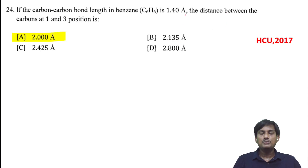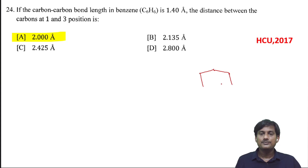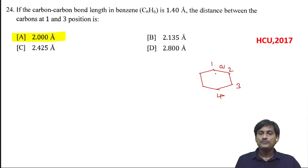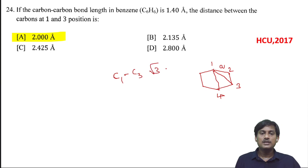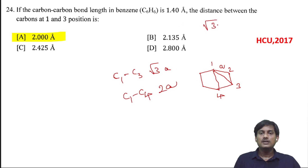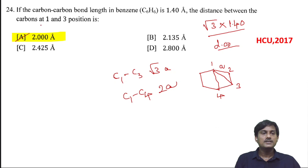If the carbon-carbon bond length in benzene is 1.4 Å, the distance between carbon at the first and third position: benzene is a hexagonal ring. The bond length A (C1 to C2) is given as 1.4 Å. The distance between C1 and C3 is √3 × A, and the distance between C1 and C4 is 2A. So multiplying √3 × 1.40, you get approximately 2.42 Å. This is the correct option.